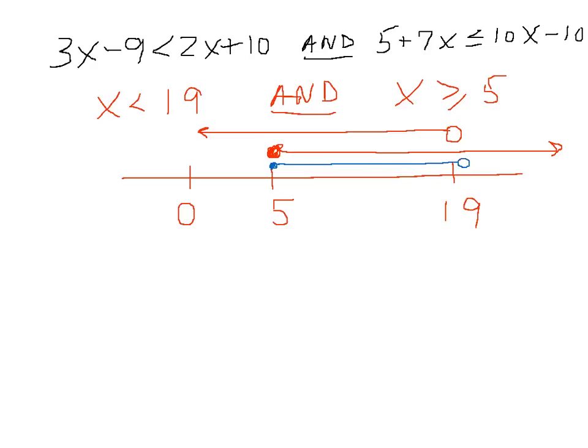And so the way I would write that solution in one statement is x is greater than or equal to 5 and less than 19. And that's the way to write a compound inequality using and.